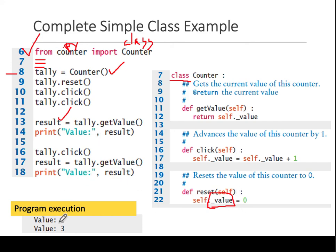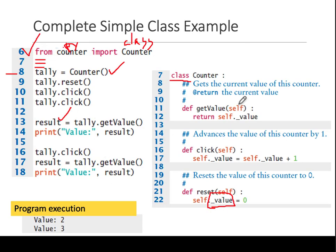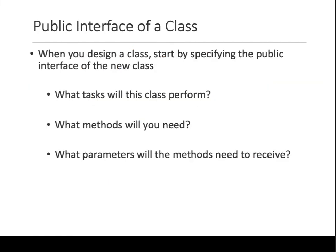When you run it you'll see the result. You can add more click statements and see how the output changes. To recap: public interfaces define which tasks the class will perform, which methods you need, and what parameters those methods need to receive. In this example all three functions have no input parameters — hence only self. If more parameters were needed, you'd add them after self with a comma.